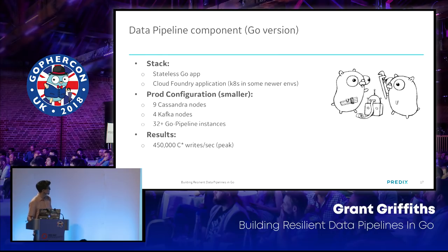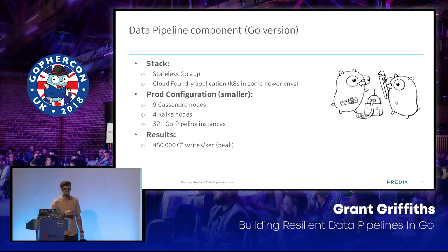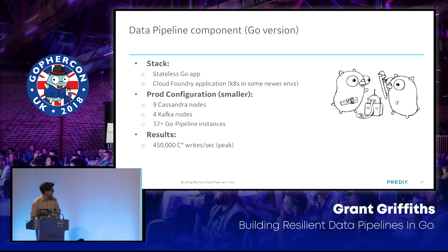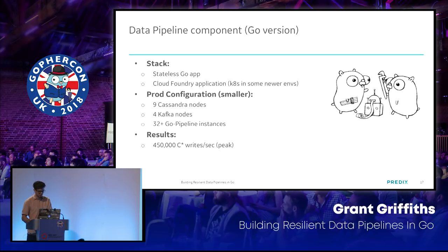With the Go version, it's just a stateless Go app. We haven't deployed it to all nine production environments yet, but we've pushed it to a smaller environment with nine Cassandra nodes, four Kafka nodes, and only 32 instances of the pipeline running. We're able to get 450,000 writes per second — half the peak load of the Java version, but with about a tenth of the cluster size. Cassandra writes are the main bottleneck, but we're seeing really good results.